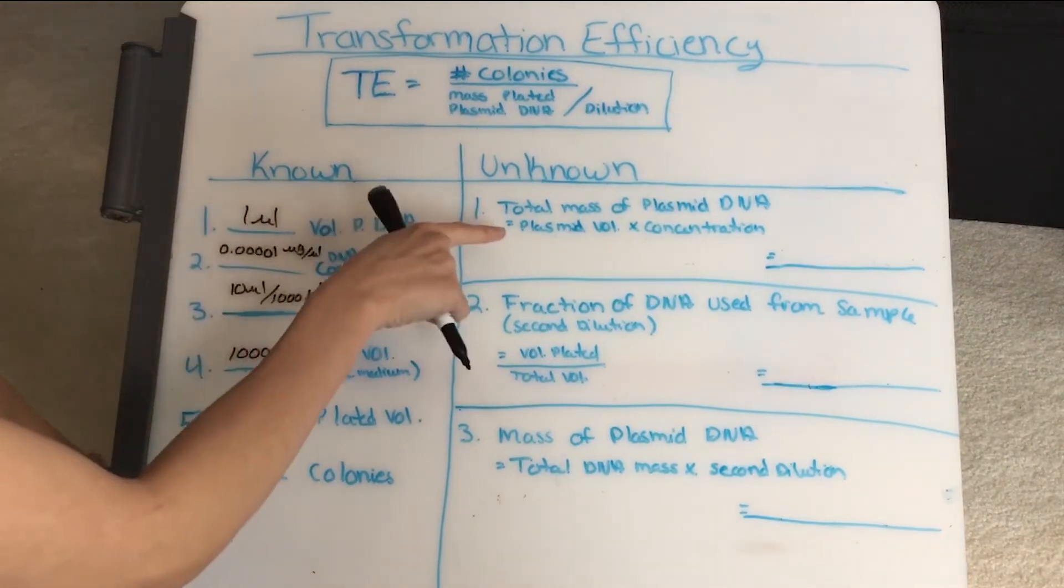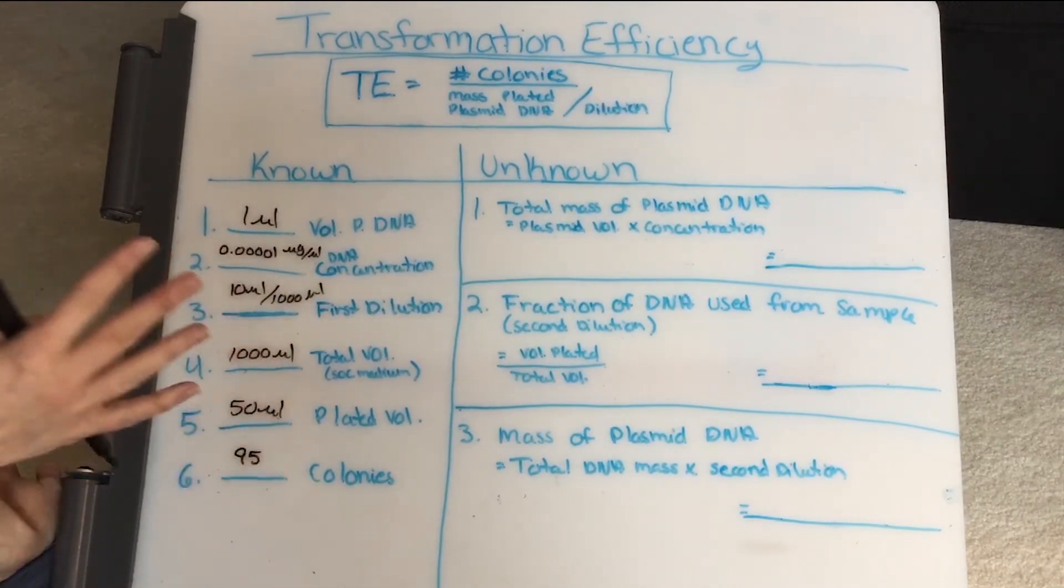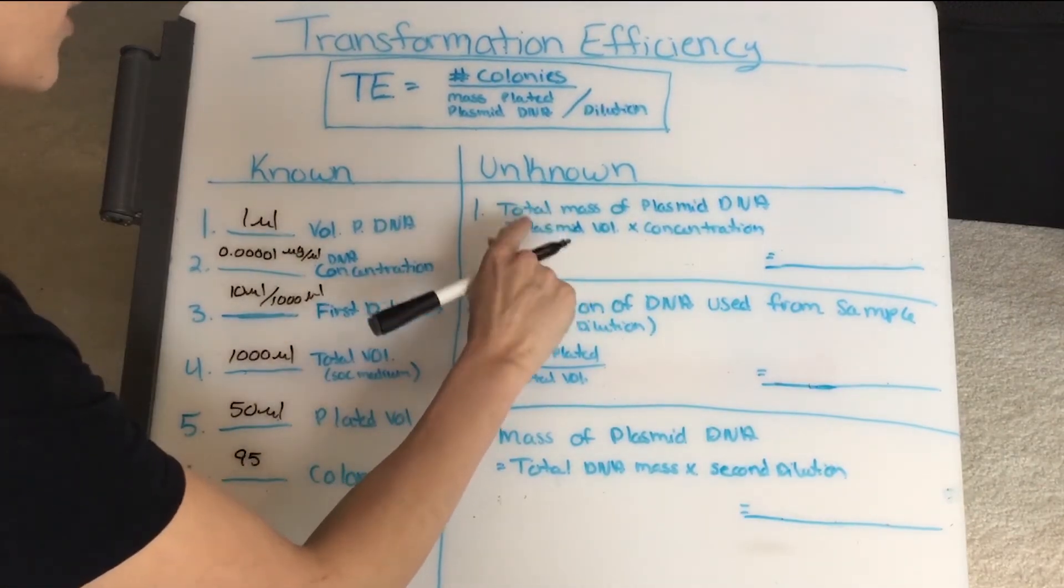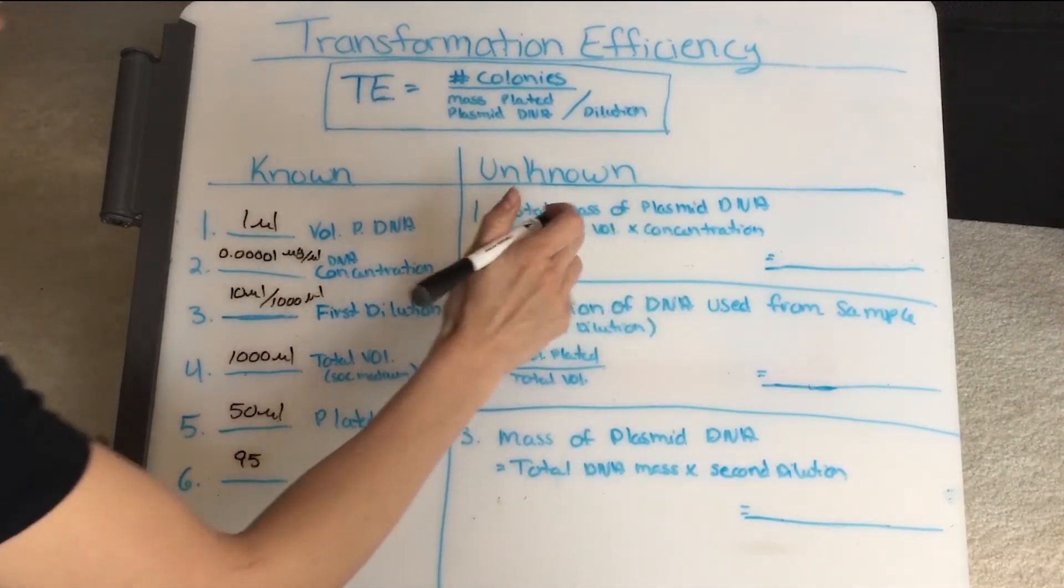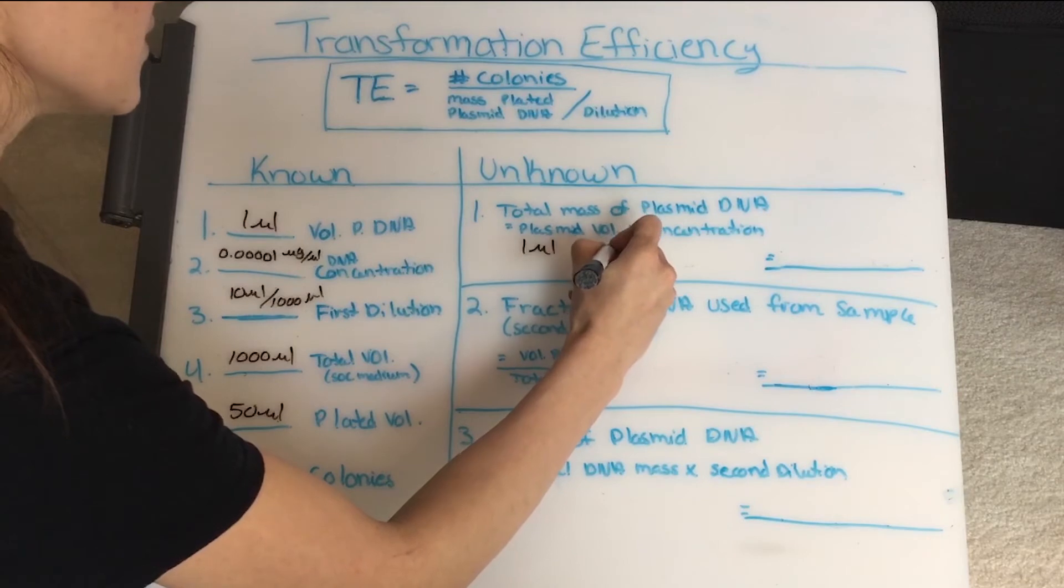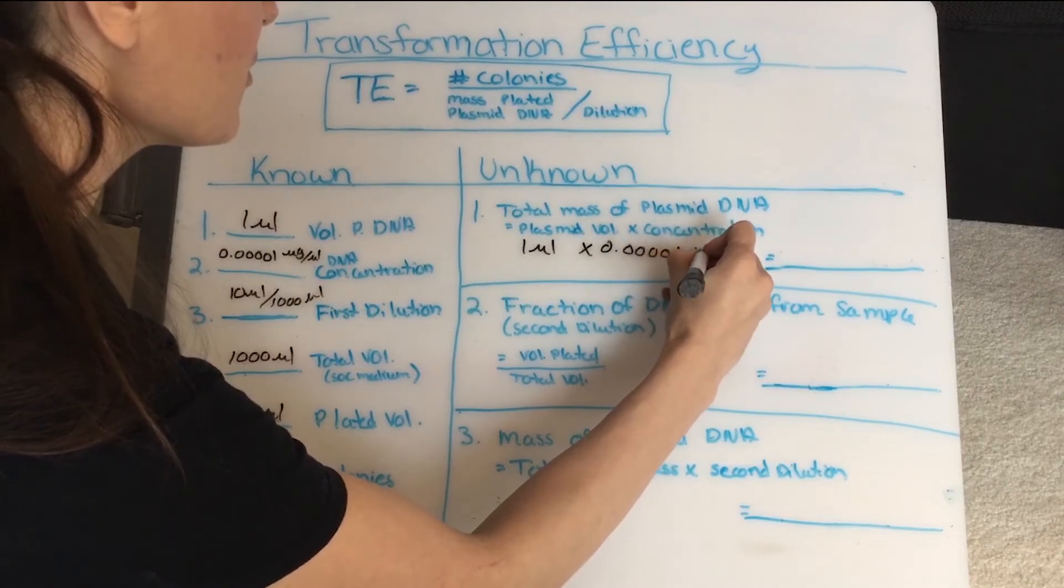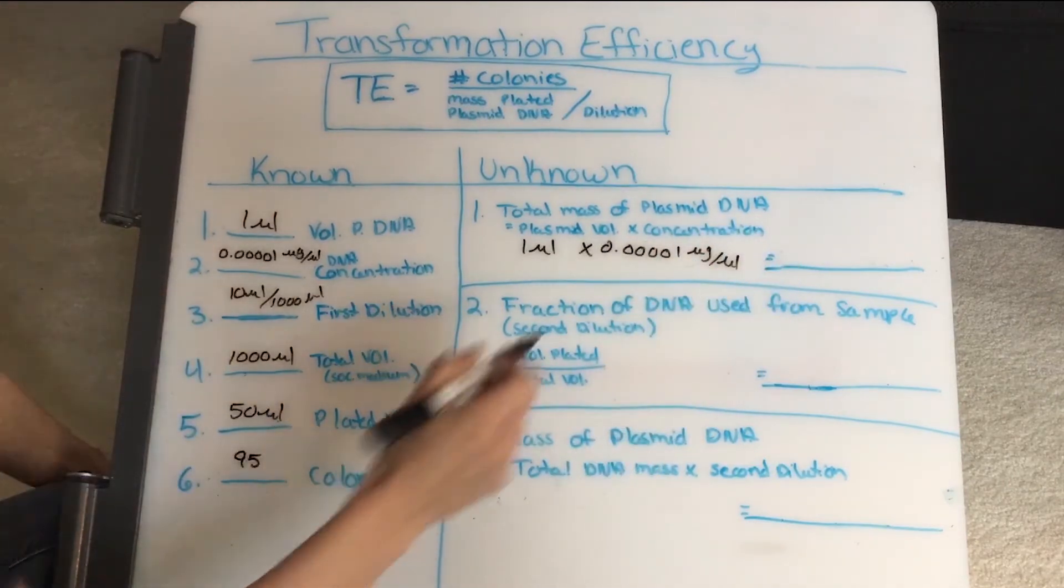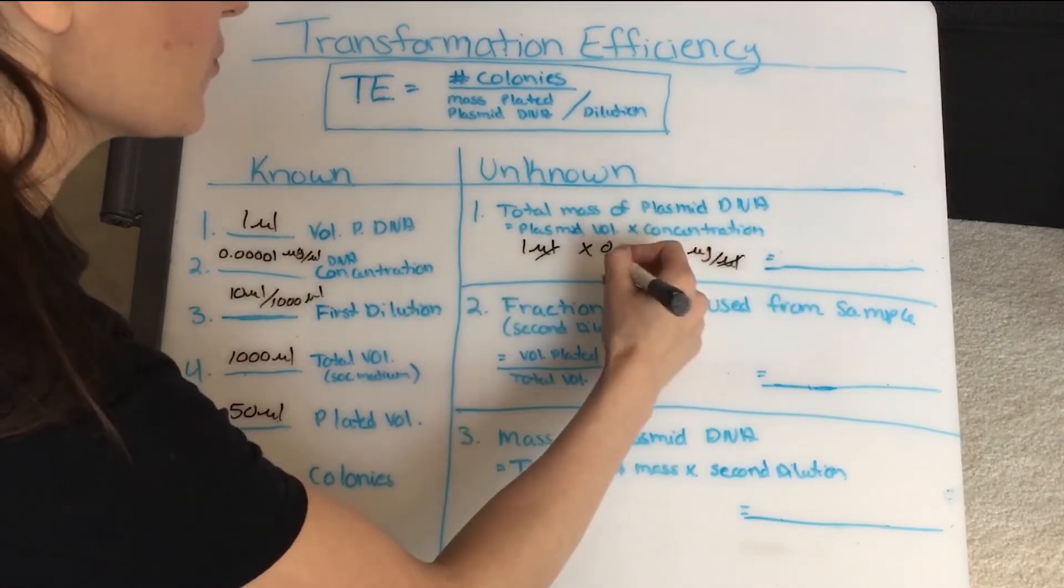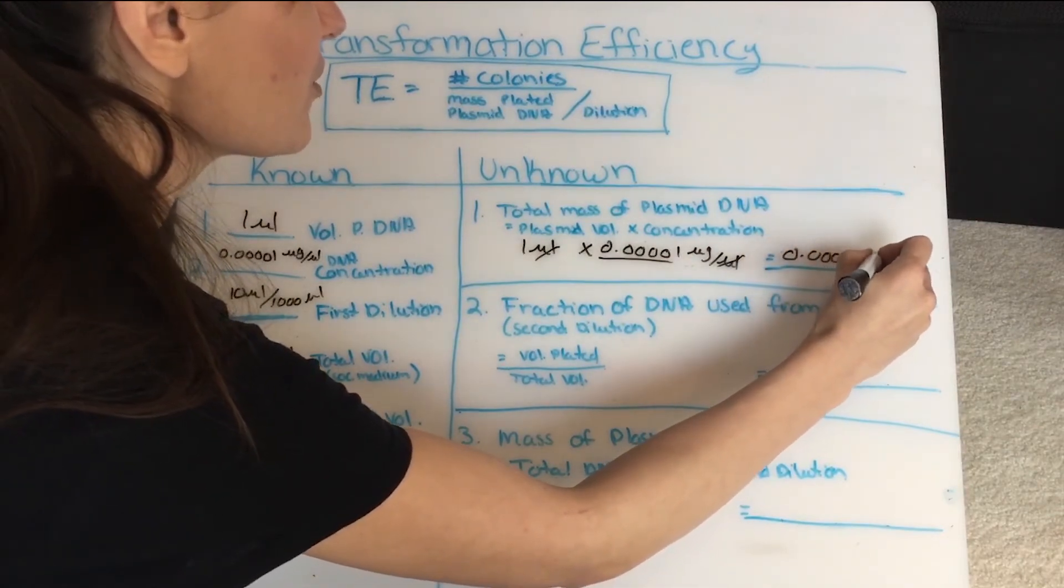So let's start with the first part here. We'll look at our total mass of plasmid DNA. And in this example, it's really easy to solve, but we're going to map it out anyway so you see how it works. So we take our volume, our plasmid volume times our concentration, and that's one microliter times 0.00001 microgram per microliter. Microliters cancel out, and we're going to be left with this basically, so 0.00001 microgram.